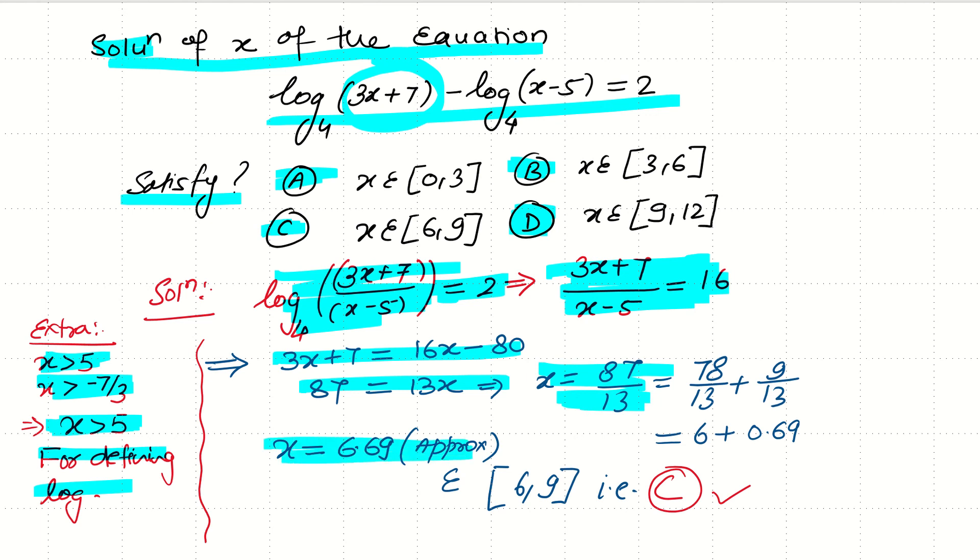That is approximately 6.67. So 6.67 is a valid answer because it is greater than 5, and 6.69 satisfies option C. So the correct choice we have is option C.